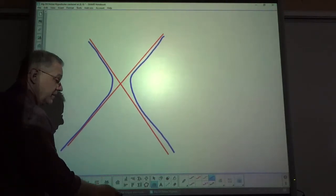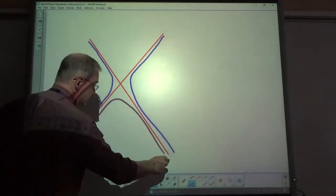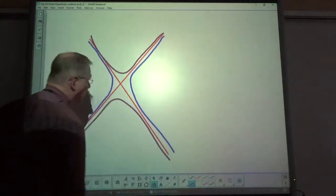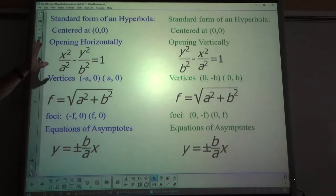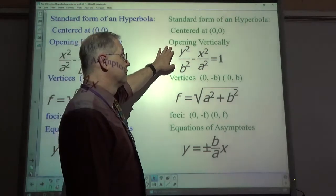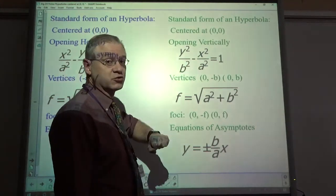Or it might be a vertically opening one where it does this. They look a little bit different than a parabola, a little wider. If it's opening horizontally, the fraction with x in it is listed first in the subtraction. If it is opening vertically, the y squared over b squared fraction is listed first in the subtraction.